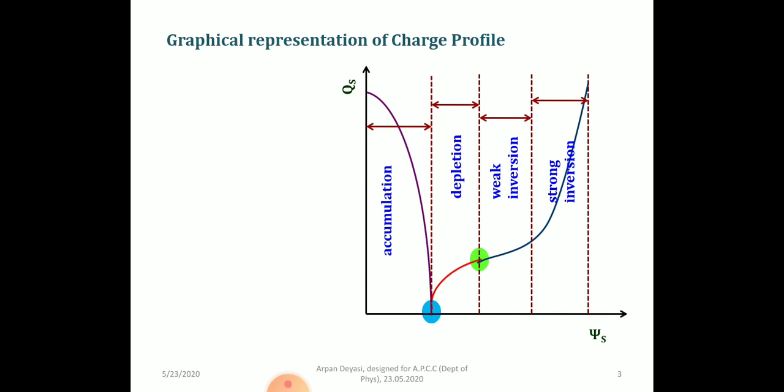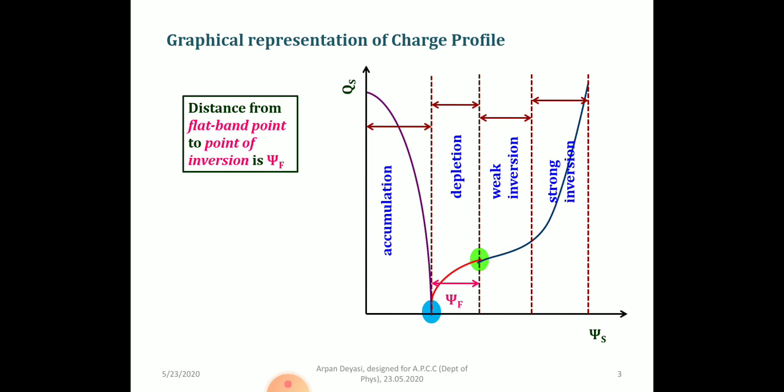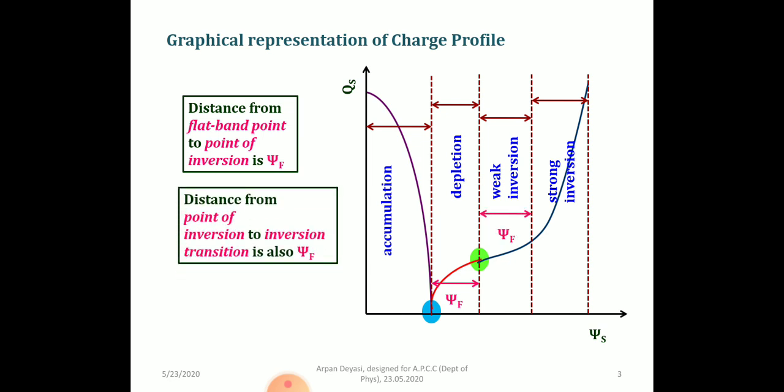The Fermi potential ψf is the distance from the flat band point to the inversion point, and another ψf takes you from inversion to the transition of inversion. So ψs = 2ψf when you travel from the flat band to the transition of inversion. For strong inversion, ψs will be greater than 2ψf. This is a very important criterion shown in the diagram — when ψs = 2ψf, the surface potential equals 2 times the Fermi potential.